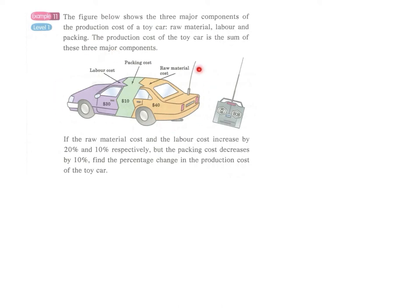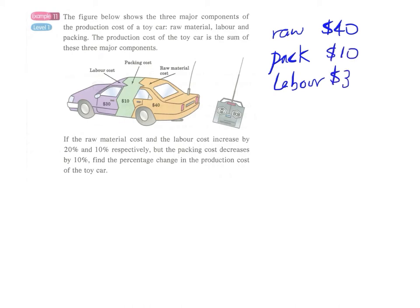The cost of producing this toy car is the sum of three parts: raw material cost, packing cost, and labor cost. We can write the values in table form: raw material $40, packing cost $10, and labor cost $30. The raw material cost and labor cost increased by 20 percent and 10 percent respectively, and the packing cost decreased by 10 percent.